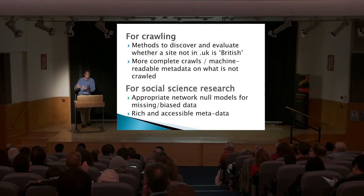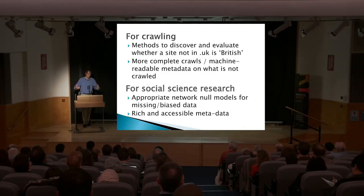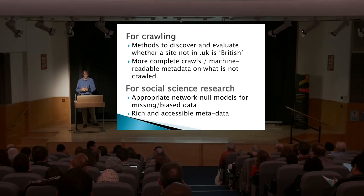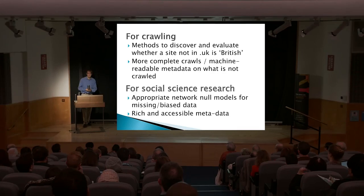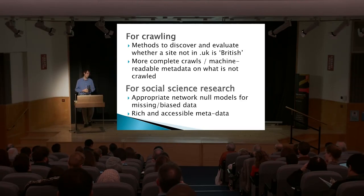We can give a site a score about how confident we are it is a British website, and therefore whether or not it should be crawled — thinking beyond the .uk subdomain, which is an easy boundary but may not be the most complete one. Can we also use data science in crawling individual sites for page discovery, dealing with personalisation and incomplete websites, and maybe creating more metadata on what is not crawled, documenting the ways the archive is incomplete?